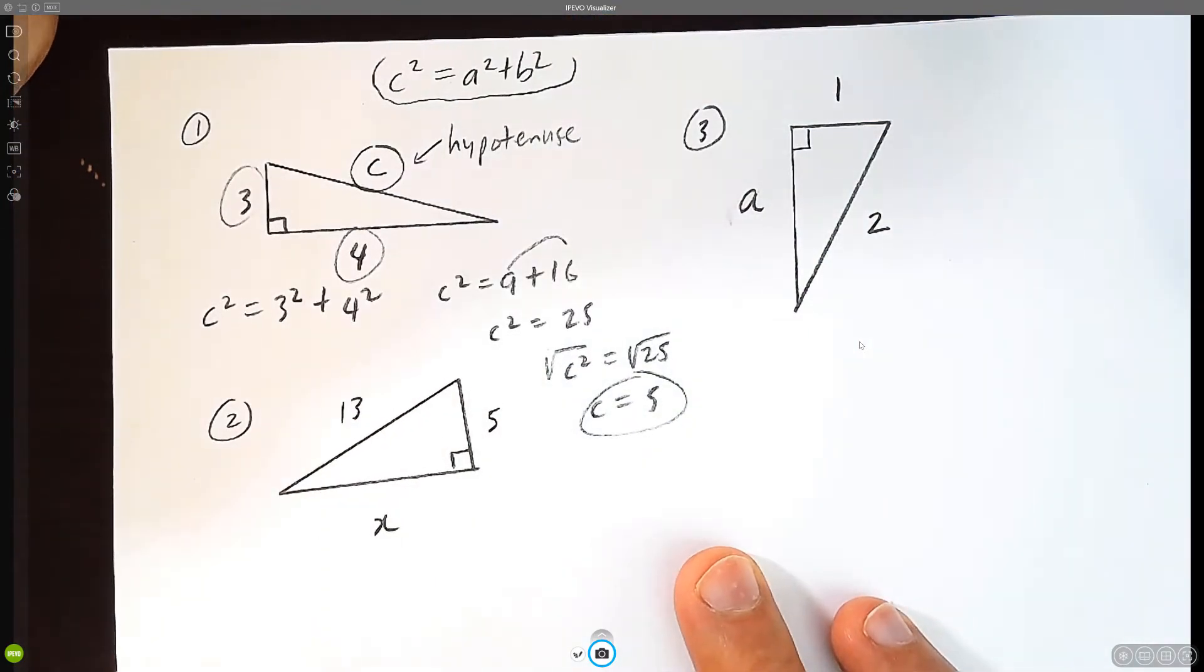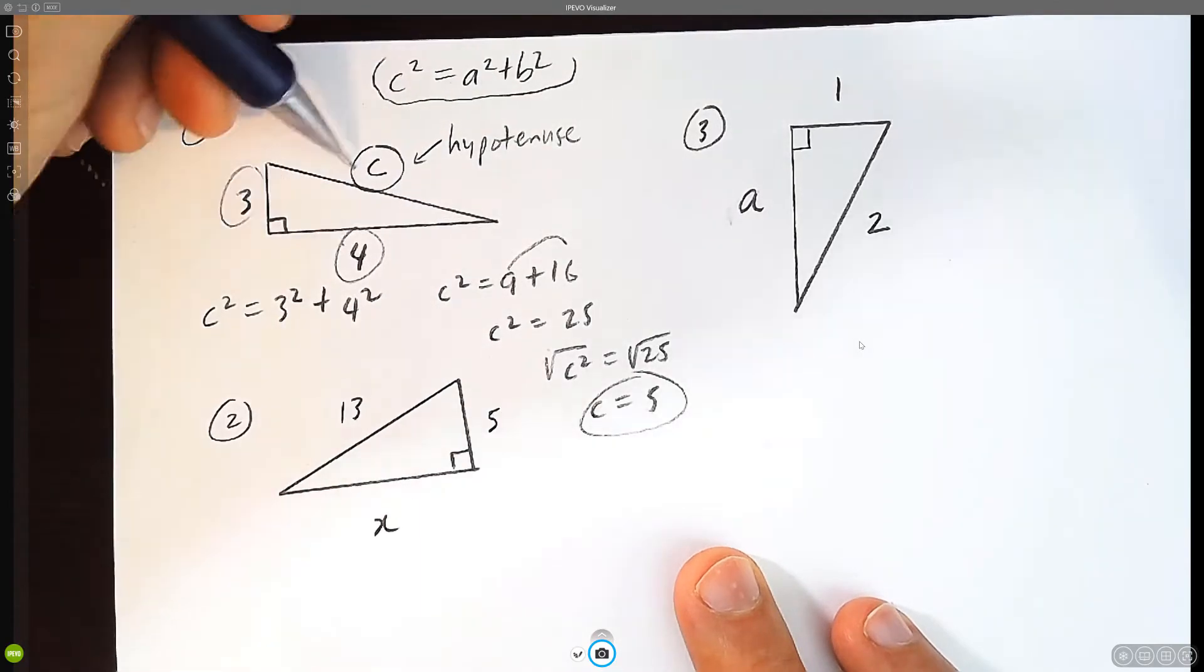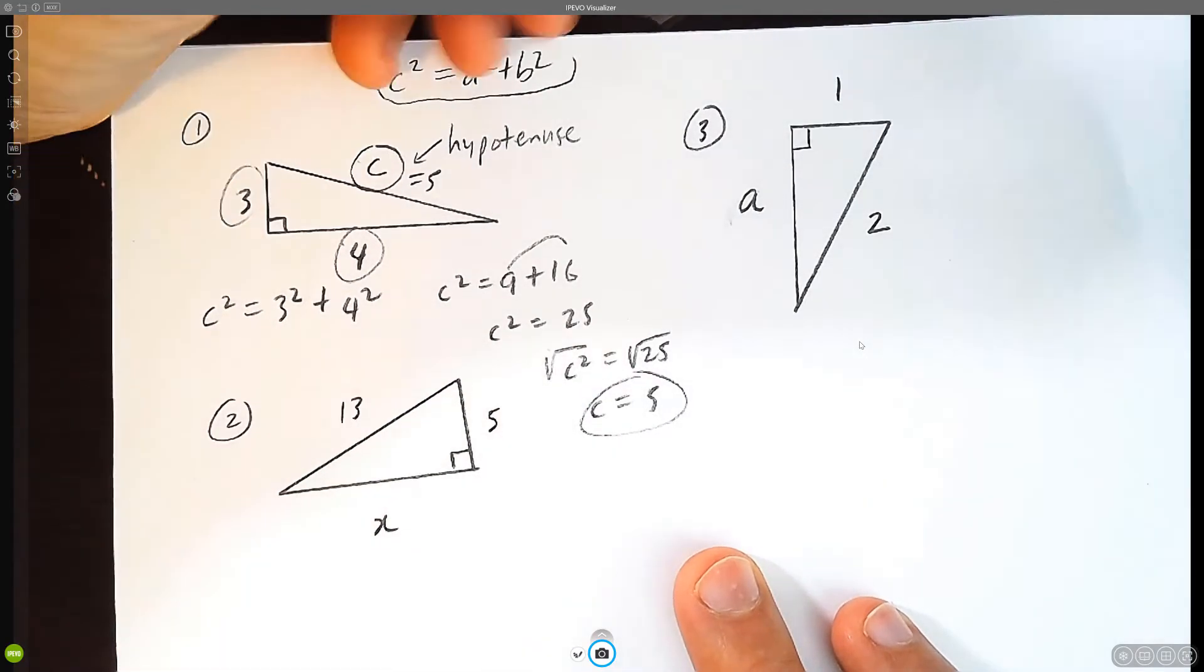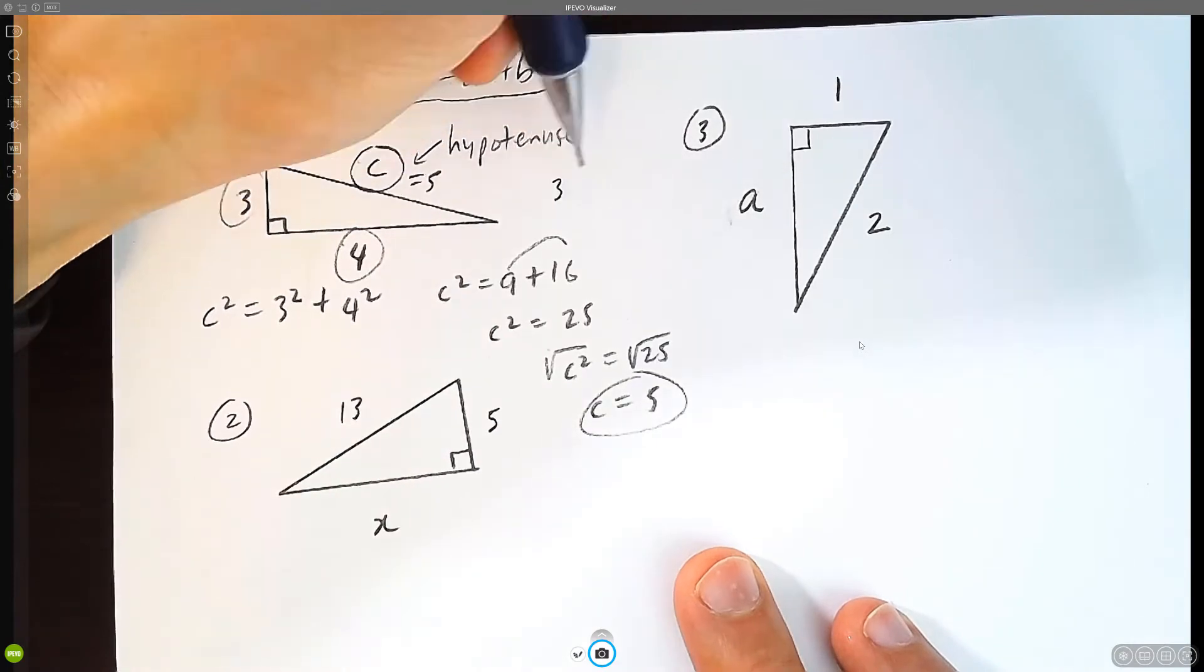So from now on, it's good to memorize the three, four, five triangle. So the answer is c equals five. But please memorize this Pythagorean triple.